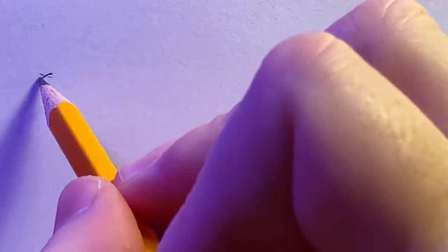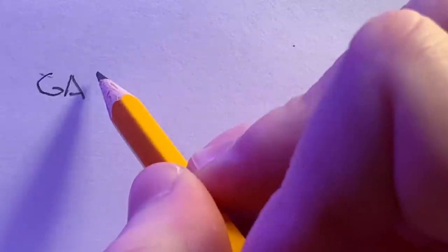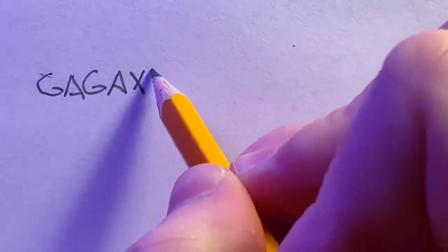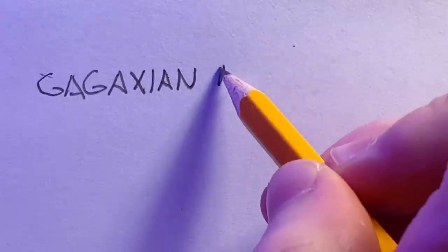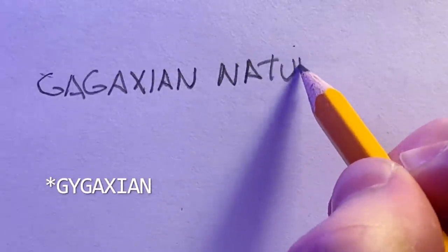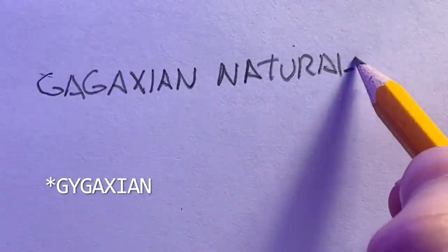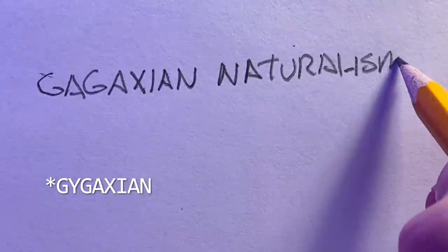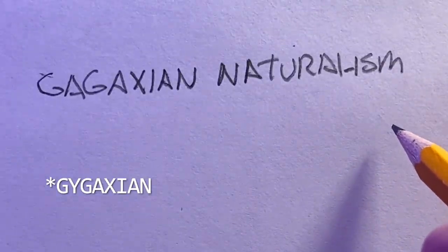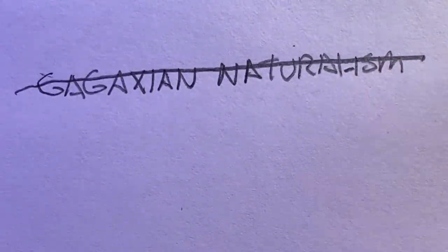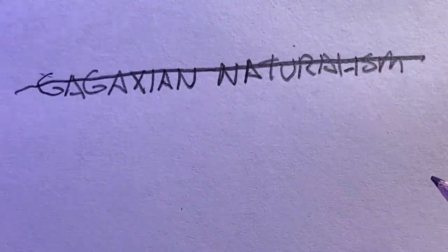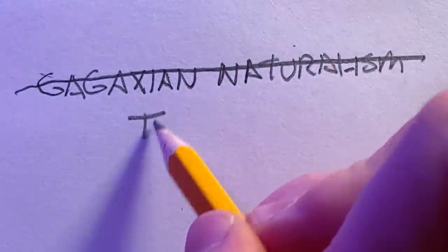Something we are not talking about today is Gygaxian naturalism. Gary Gygax, one of the original authors of Dungeons and Dragons, had this way of writing monster descriptions as if he was writing about actual animals, even though they were magical. We're not going to be talking about that today — I honestly think that is an entirely separate topic.